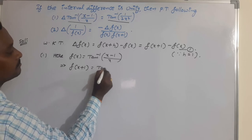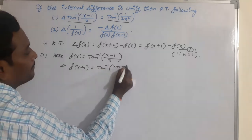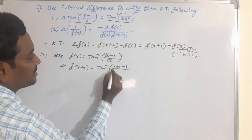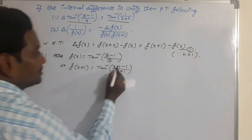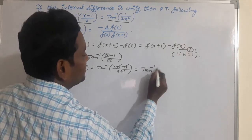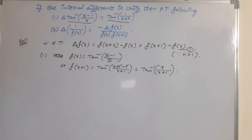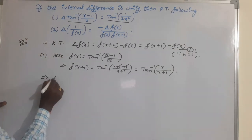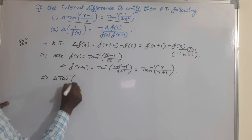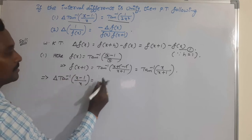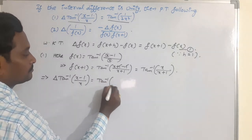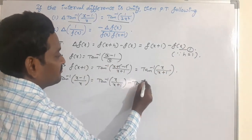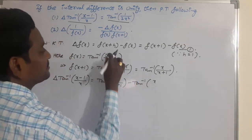From f(x), we find f(x+1) by replacing x with x+1 throughout. So the numerator becomes (x+1) minus 1, and the denominator becomes x+1. The plus 1 and minus 1 cancel, giving f(x+1) = tan inverse of x by (x+1). Now substituting both functions into the formula, delta of tan inverse of (x-1)/x equals tan inverse of x/(x+1) minus tan inverse of (x-1)/x.